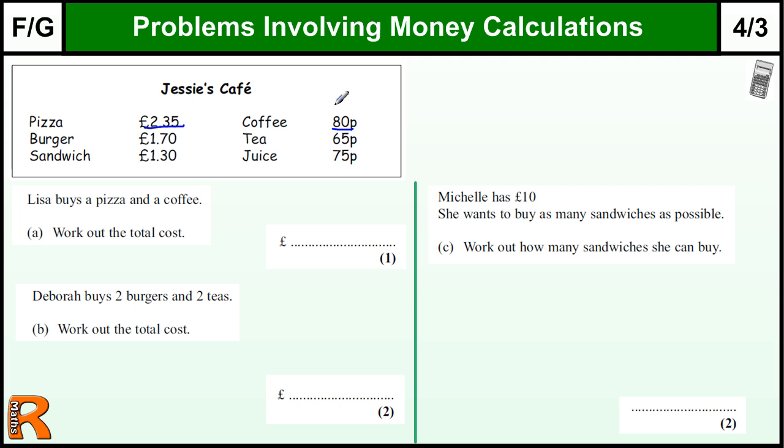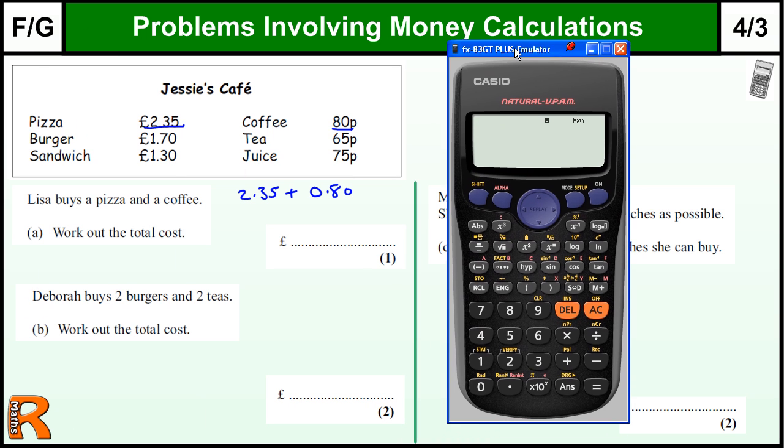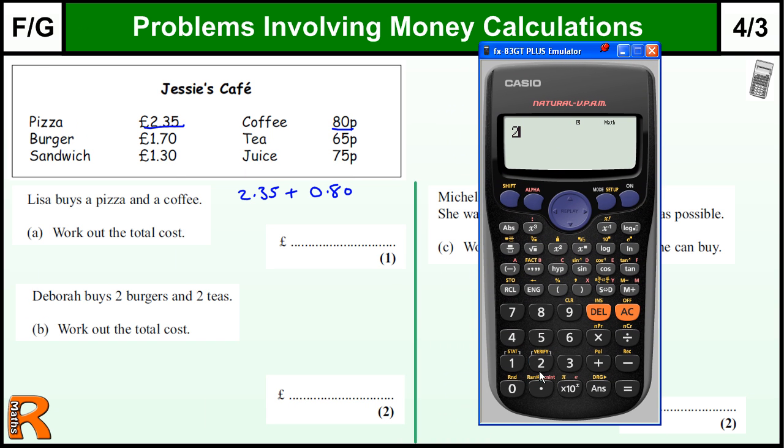The key thing here is the answer's got to be in pounds, so we've got to be careful. This is 80 pence, so we're adding £2.35 plus 80 pence. 80 pence is £0.80 or £0.8, and we can use the calculator. Might as well see if you're allowed to. So 2.35 plus 0.8 - you can put the zero in if you want, helps you, but don't need to.